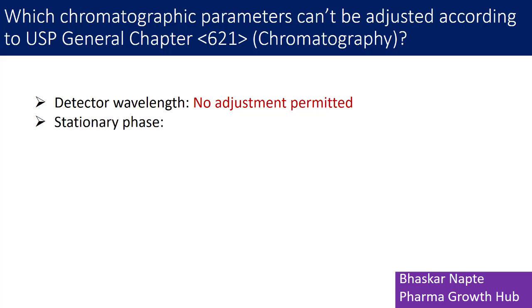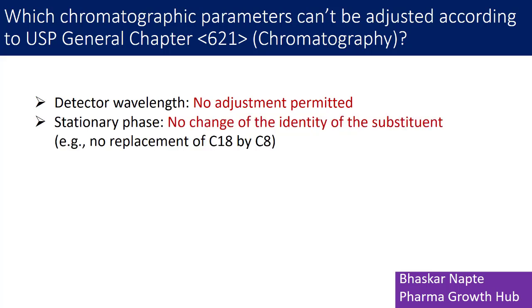The second important parameter is the stationary phase, or column chemistry. According to USP General Chapter 621, no change of the identity of the substituent is allowed. For example, no replacement of C18 by C8. You can alter the dimensions of the column — you can have a different particle size or adjust the inner diameter — but the stationary phase cannot be adjusted according to USP General Chapter 621.